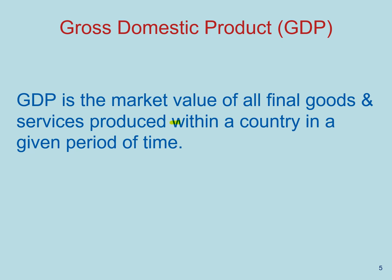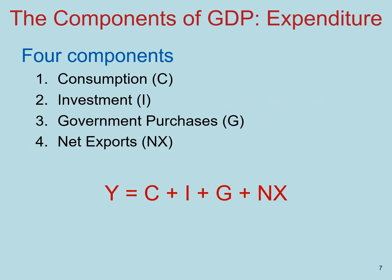GDP is a geographical indicator and is based on the borders of a country. We can divide the components of GDP through the expenditure approach into consumption, investment, government purchases, and net exports. All of those components added up together provide us with a total measure of the expenditures or income in the economy, so we can add them up together to get GDP.